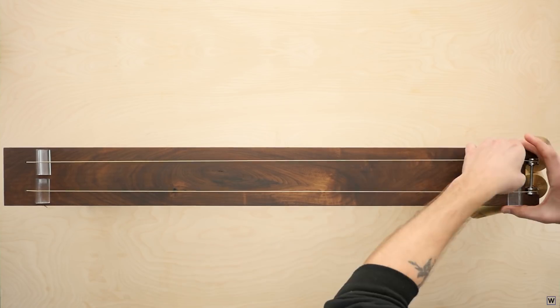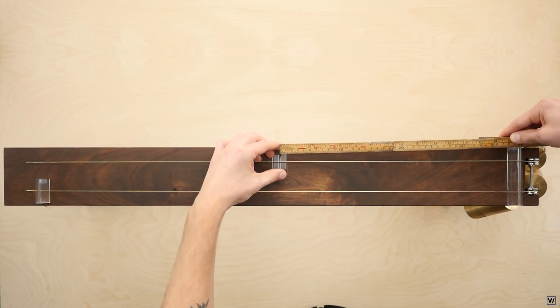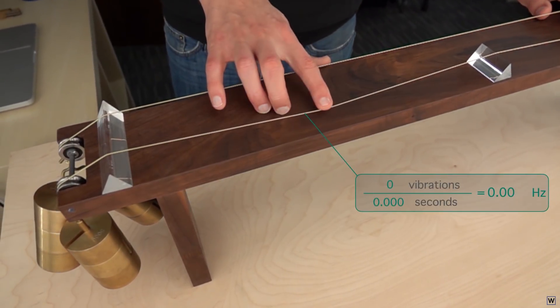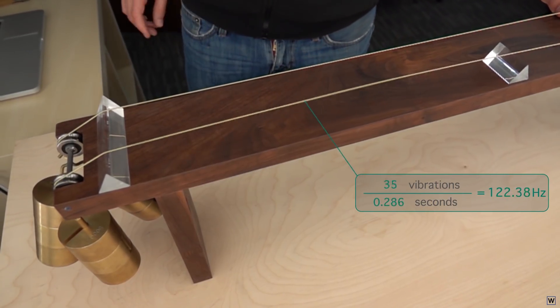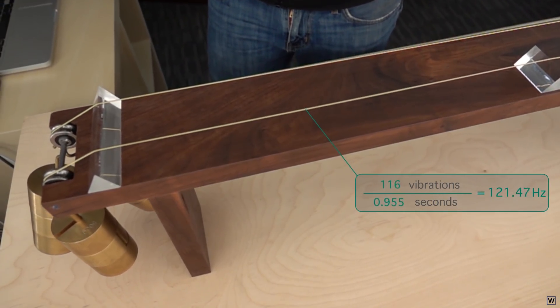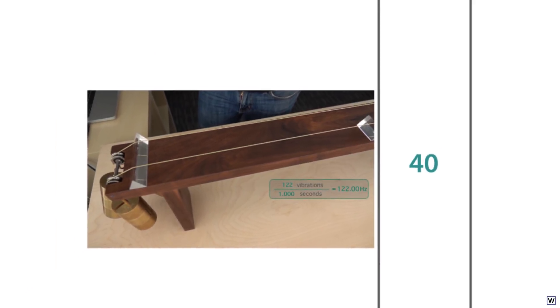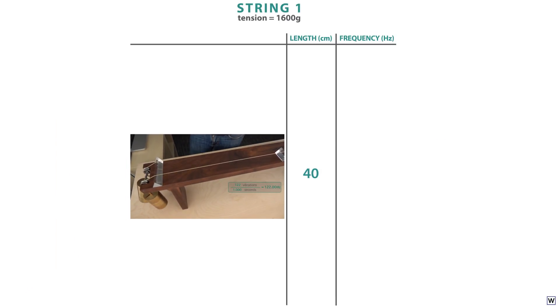Let's fix our tension, and see how our frequency changes with a few different length values. At a length of 40 centimeters, our string completes about 122 full cycles in one second. So our frequency is approximately 122 cycles per second, also known as 122 Hertz.